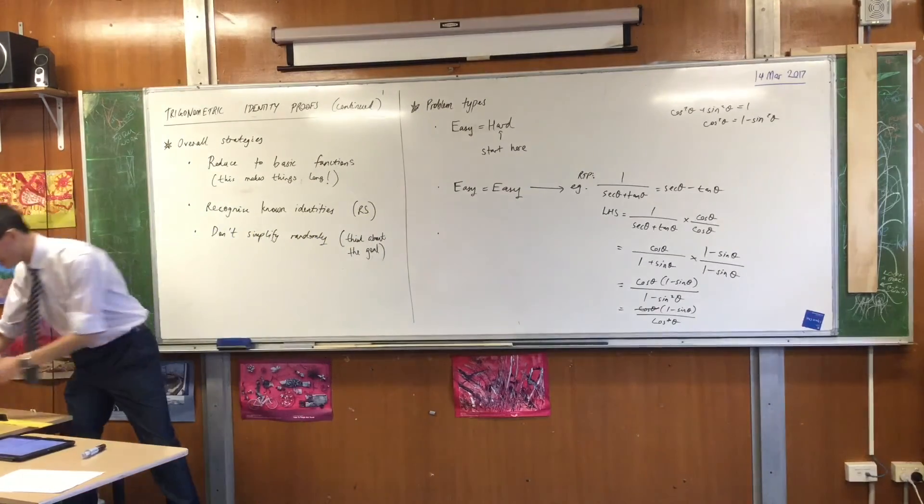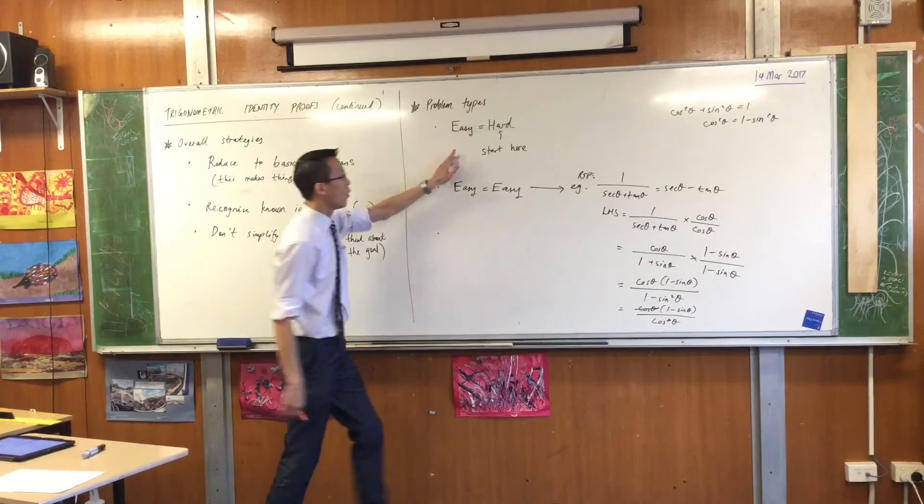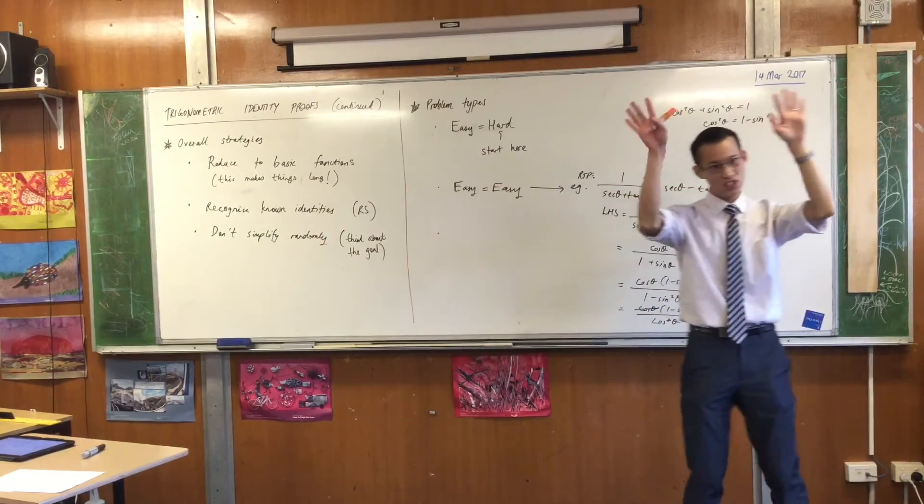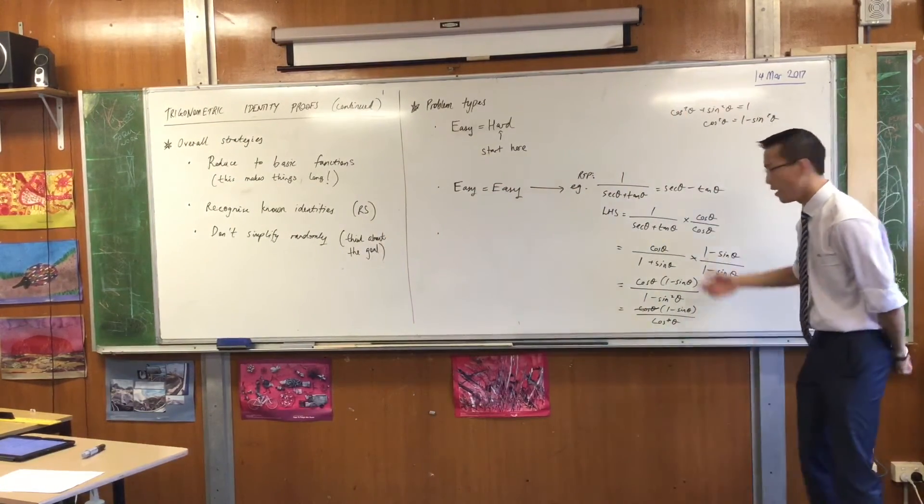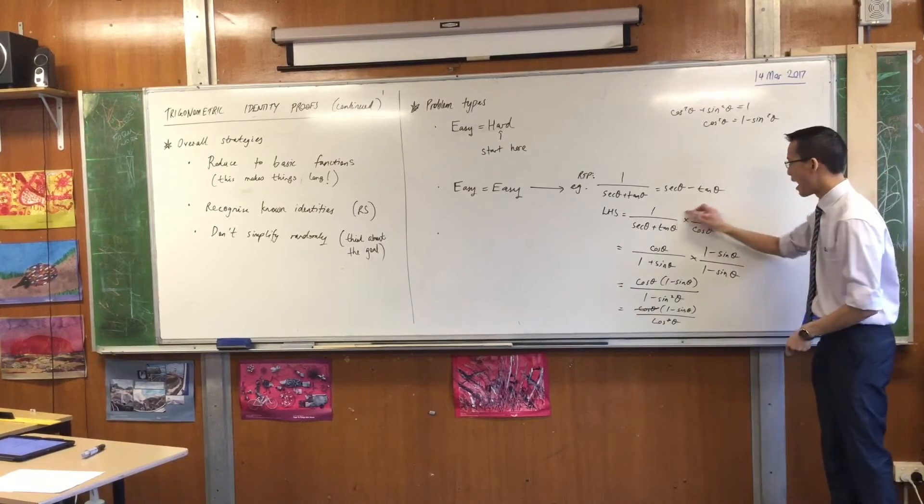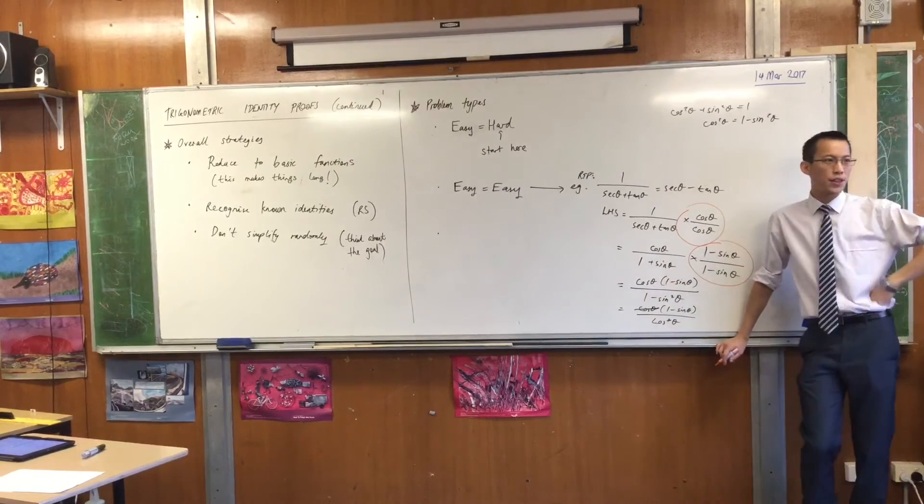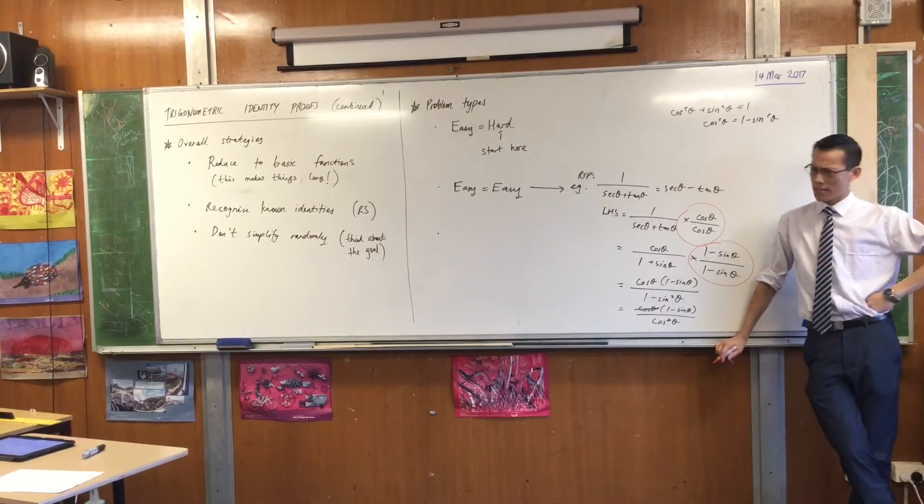Now, here's what I want to point out that's interesting about this question, and it's different from this kind. When it's easy to hard, you just think, okay, I'm just going to simplify it down as far as I can. But in this case, on not one, but two occasions, I had to make things messier before they became neater. Does that make sense?